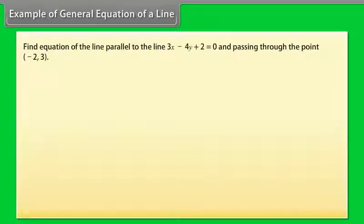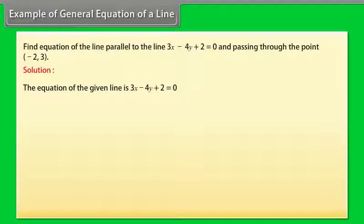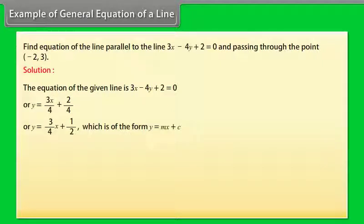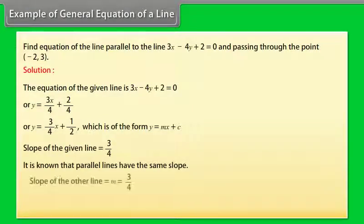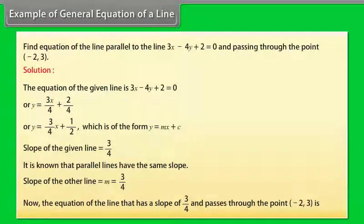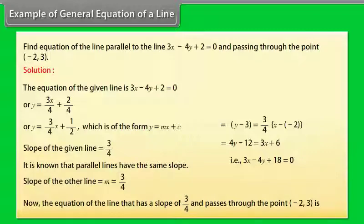Example: Find the equation of the line parallel to 3x − 4y + 2 = 0 and passing through the point (−2, 3). The given line can be written as y = (3/4)x + 1/2, so its slope is 3/4. Parallel lines have the same slope, so the new line also has slope m = 3/4. The equation of the line with slope 3/4 passing through (−2, 3) is 3x − 4y + 18 = 0.